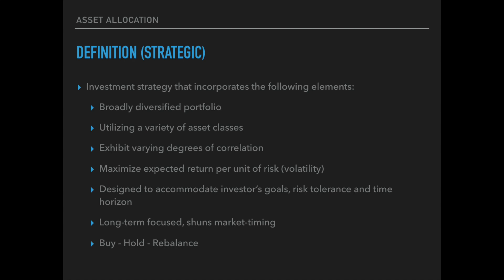Strategic asset allocation is an investment strategy that incorporates the following elements. First, a broadly diversified portfolio which utilizes a variety of asset classes, such as stocks, bonds, and cash. These asset classes exhibit varying degrees of correlation, meaning some may move in the same direction at the same time, while other asset classes may move in the opposite direction — meaning they are negatively correlated. Having negatively correlated assets in a portfolio adds to the level of diversification.